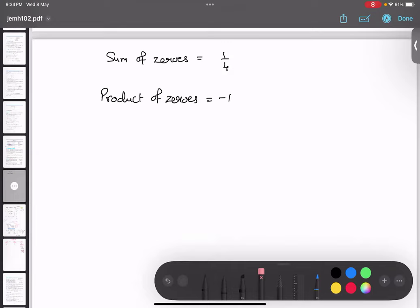Do you remember what is the formula for sum of zeros? Yes. Minus b upon a. Minus b upon. And what is the formula for product of zeros? C upon a. C upon a. So, in this formula, always remember one very important thing is denominator should be same. Okay. Denominator should be same.